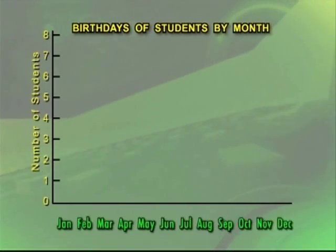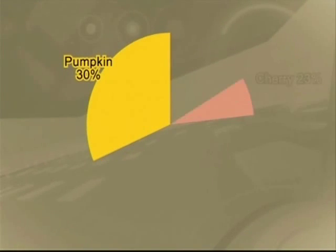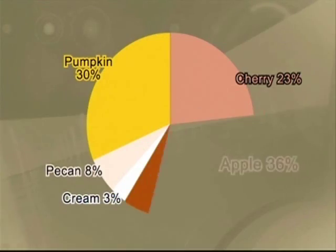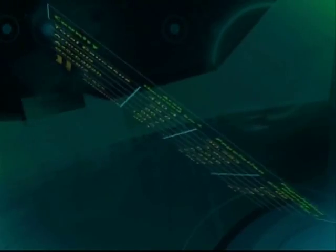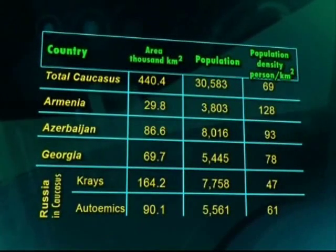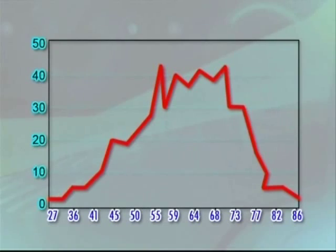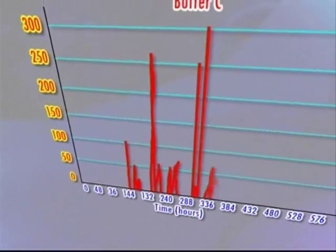Statistical information may be presented in various forms. These include bar graphs, pie charts, tables, and histograms.